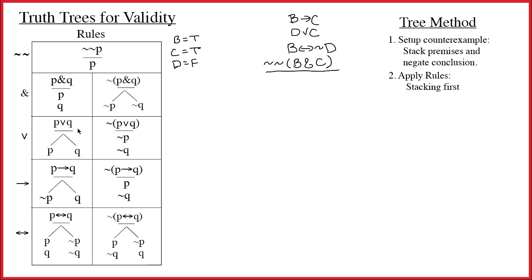Contrast that with a wedge — there are two different ways to make it true: you could make P true, or you could make Q true. A wedge really is an upside-down branch, representing the options of going two different directions. Ampersands are stacking rules; wedges are branching rules. Every rule that has a branch in it is a branching rule; all the others are stacking rules. We want to apply the stacking rules first.